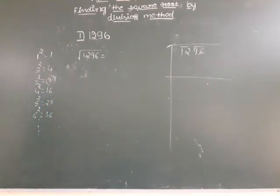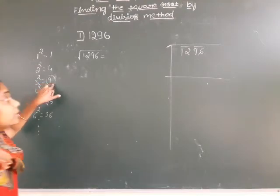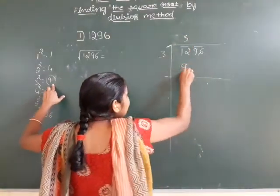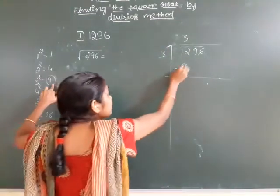So 9 is a square number. 3 times 3 is 9. So subtract 9 from 12.